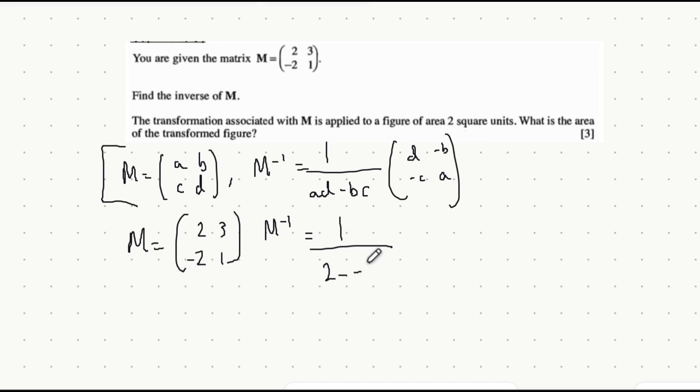3 times minus 2 is minus 6 and then inside of the matrix we swap the positions of A and D so it becomes 1 and 2 instead of 2, 1 and we multiply both B and C by minus 1. So 3 times minus 1 is minus 3, minus 2 times minus 1 is positive 2.